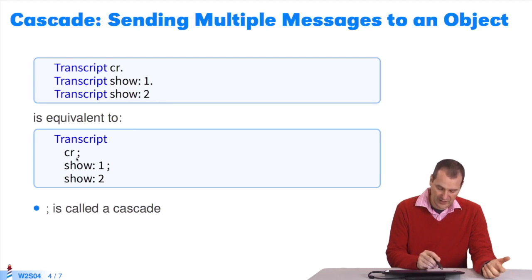I write transcript CR, semicolon. I send the message CR to the object transcript. The cascade says, from now on, all messages are sent to the same receiver as the first. It means show one is sent to transcript and show two to transcript.